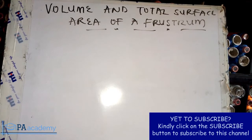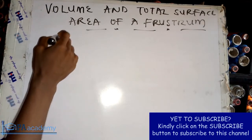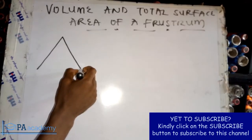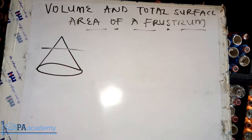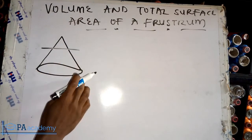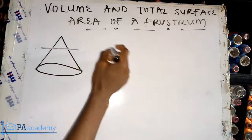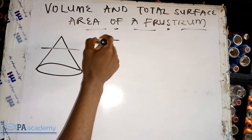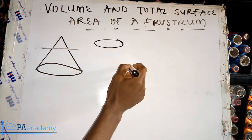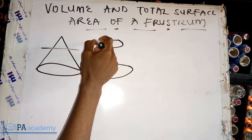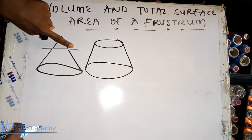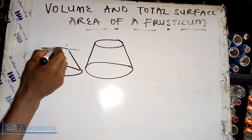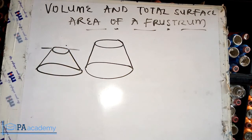A frustum is gotten from a cone. If we have a cone and this part at the top is cut off, it will form a frustum. An example of a frustum is your funnel. So once this top part is cut off it forms a frustum, and you also have another circle at the top — so this is a frustum.